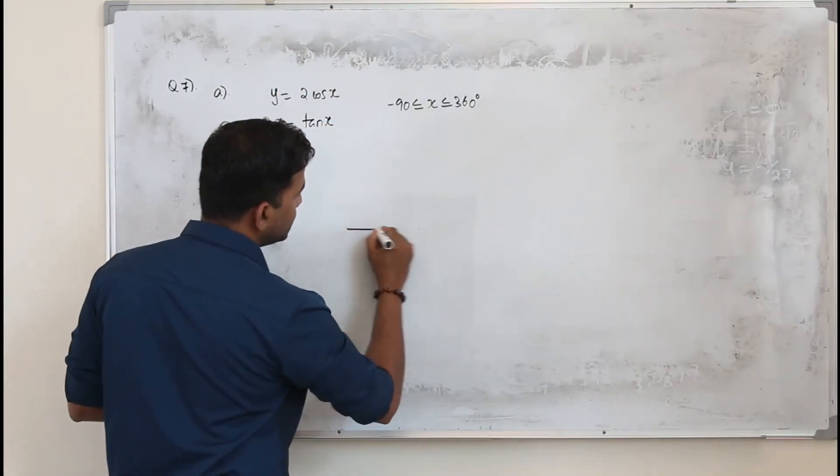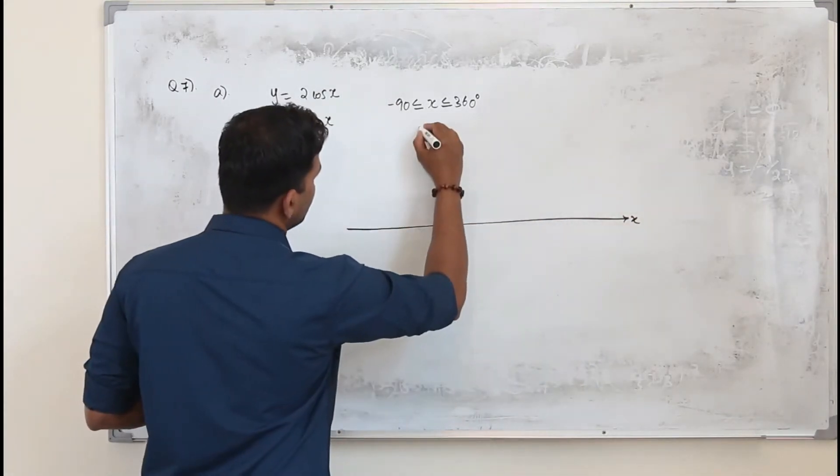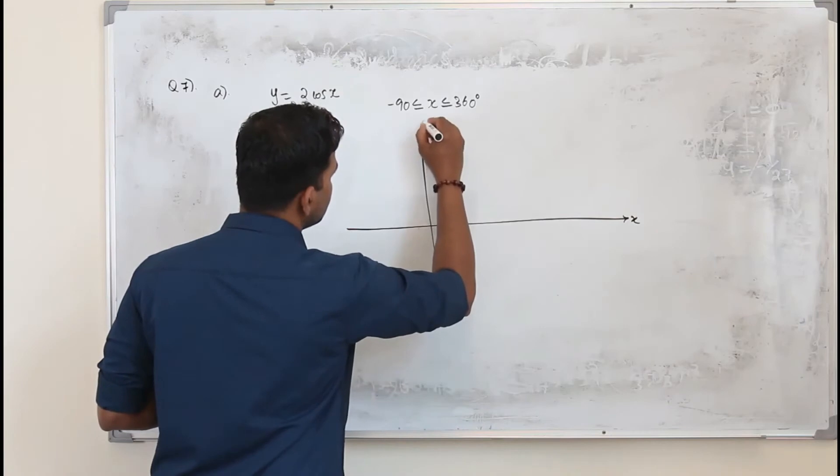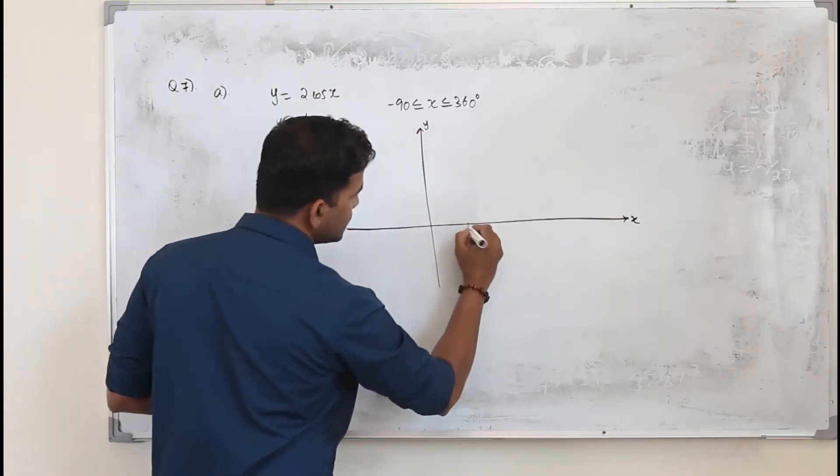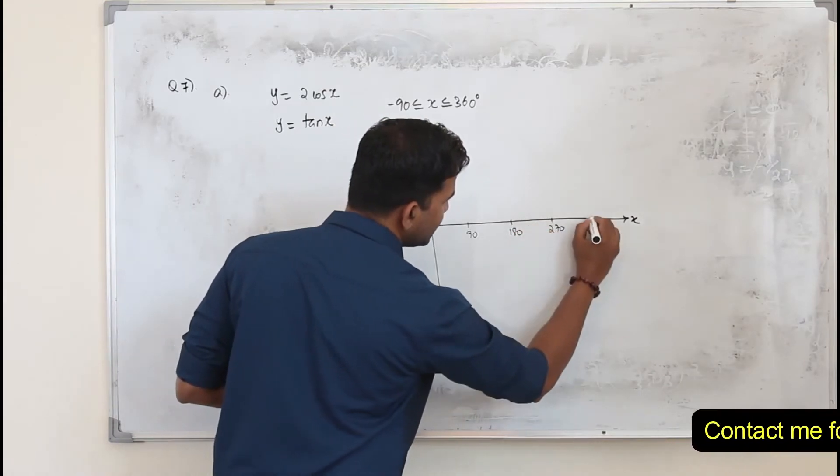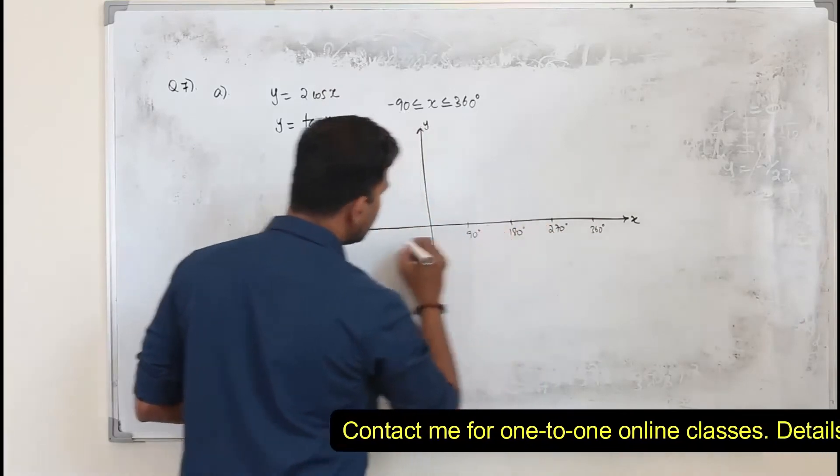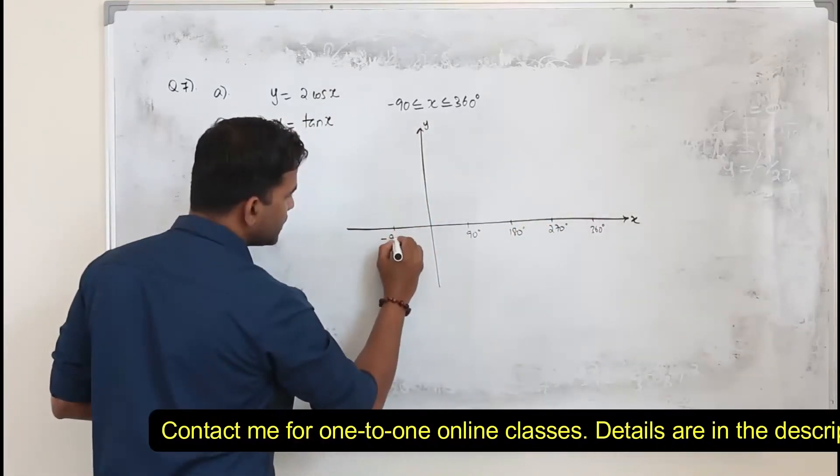Take the x-axis and y-axis, marking 90, 180, 270, 360 degrees, and minus 90 degrees.